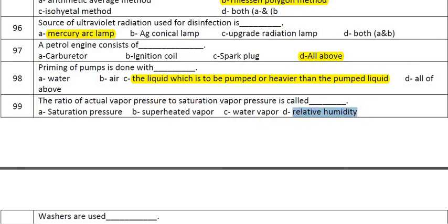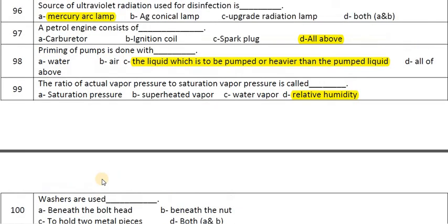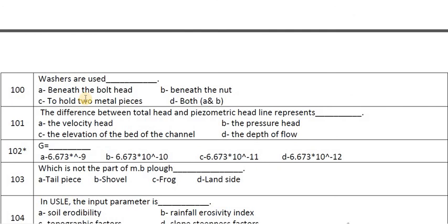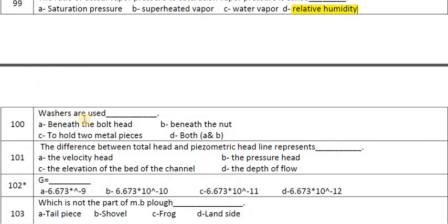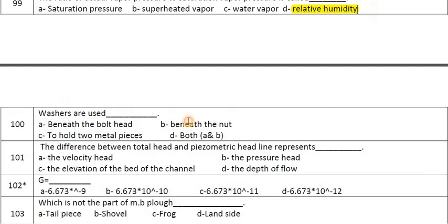The ratio of actual vapor pressure to saturated vapor pressure is called relative humidity. Washers are used beneath the bolt head, beneath the nut to hold two metal pieces together — both a and b is the correct answer.